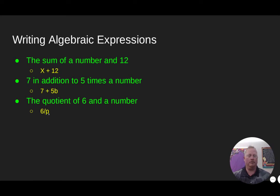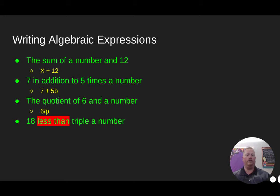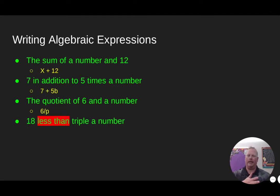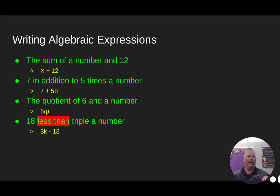'Dividing six and a number' gives us six divided by p, written as the fraction 6 over p. Now the tricky one: '18 less than triple a number.' Remember, 'less than' is tricky. If I say 18 less than 19, that's 19 minus 18 — I didn't start with 18. Similarly, 18 less than 100 is 100 minus 18. So '18 less than triple a number' means triple the number first, then subtract 18. The order gets switched.